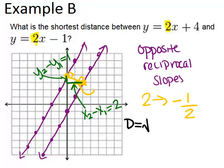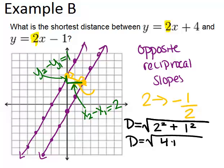It's just going to be the square root of the difference in the x's, which is 2 squared, plus the difference in the y's, which is 1 squared. Keep going to simplify this a bit, and we get 4 plus 1, or square root of 5. So the shortest distance between those two lines is the square root of 5, or root 5 units.